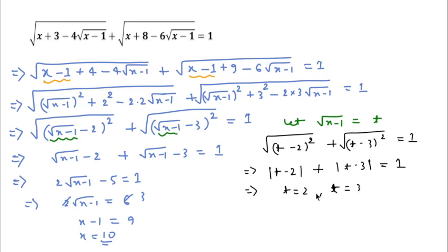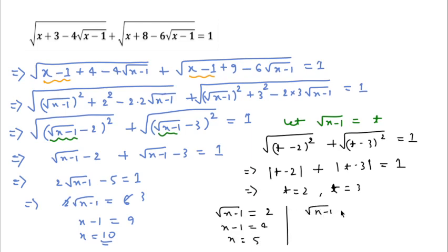So t can be 2 or 3. Substituting back: if √(x−1) = 2, squaring gives x − 1 = 4, so x = 5. If √(x−1) = 3, squaring gives x − 1 = 9, so x = 10. Therefore there are two values of x: 5 and 10.